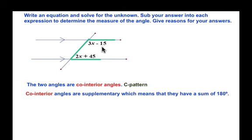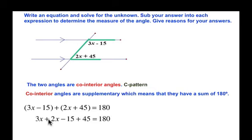We can write an equation based on that information: (3x - 15) + (2x + 45) = 180 degrees. All we're doing here is adding these two angle measures together.